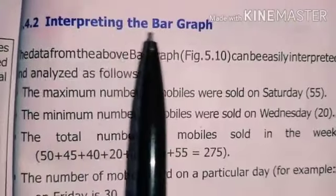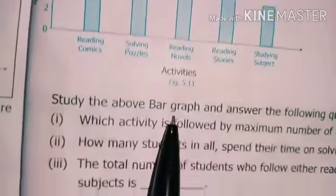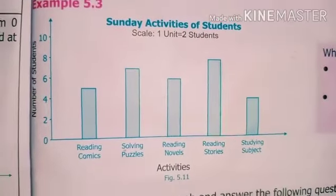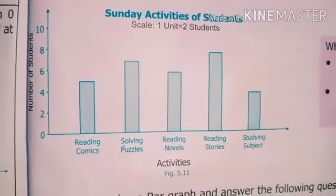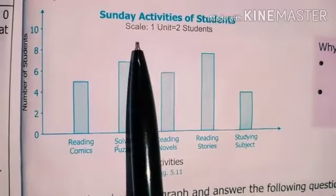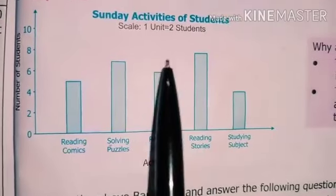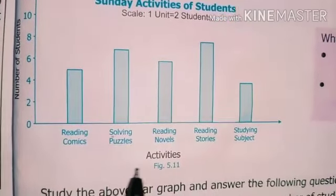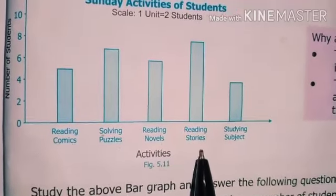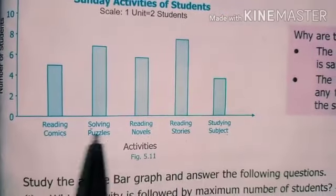Now, interpreting the bar graph. Study the given bar graph and answer the following questions. The title is 'Sunday Activities of Students' and the scale is: one unit is equal to two students. The activities shown are: reading comics, solving puzzles, reading novels, reading stories, and studying subject.